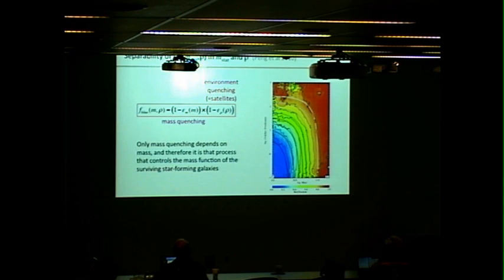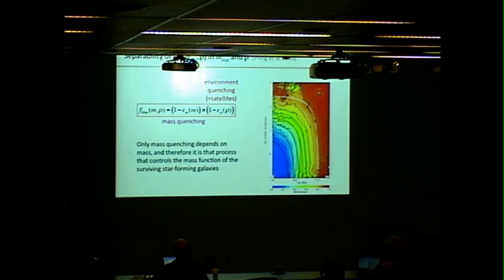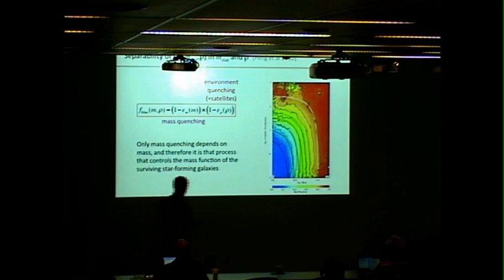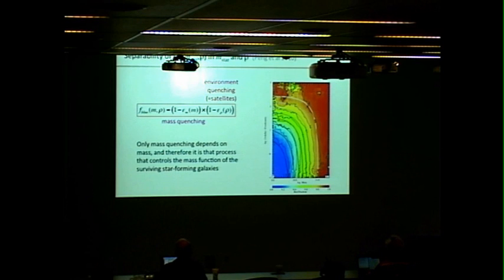Given that, it's only mass quenching which depends on mass, and therefore it is mass quenching which determines the mass function of the surviving star-forming galaxies. One of the important things is then to see how that mass function is itself a very strong diagnostic of the action of quenching at any epoch.